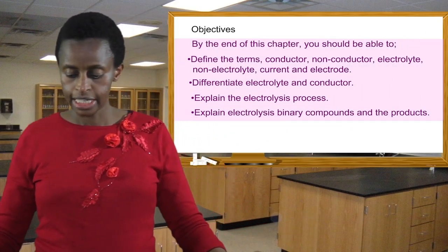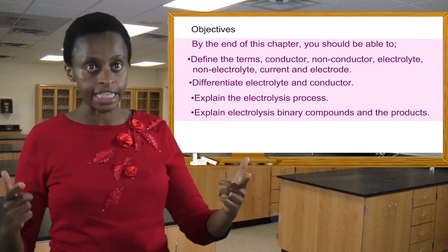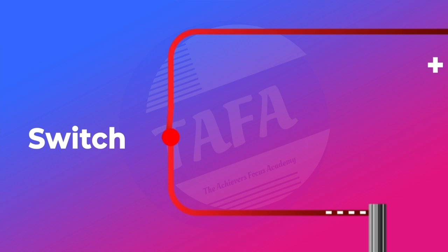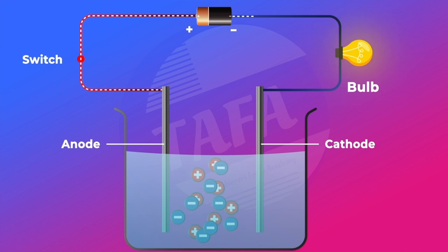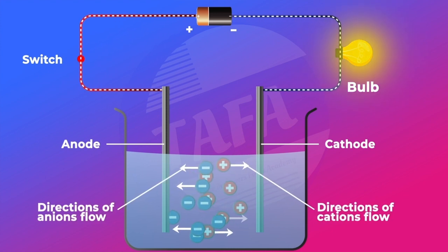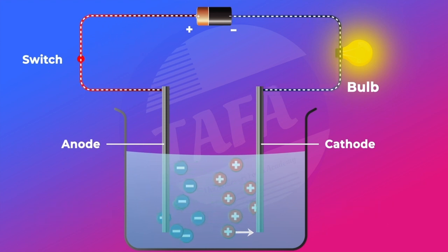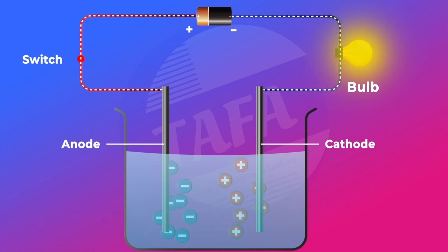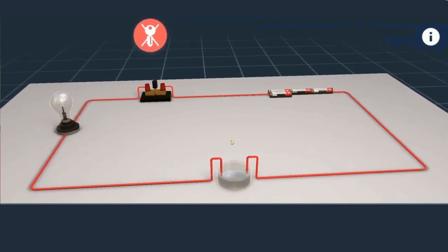So we will start by saying that to determine if a solid can conduct electric current, it is usually connected to an electric circuit. This circuit also has a bulb connected to it, and when the bulb lights, then when the substance is connected, we know that the substance can conduct electricity because the circuit is complete. When the bulb does not light, then the solid substance does not conduct electricity; therefore, it has not completed the circuit.